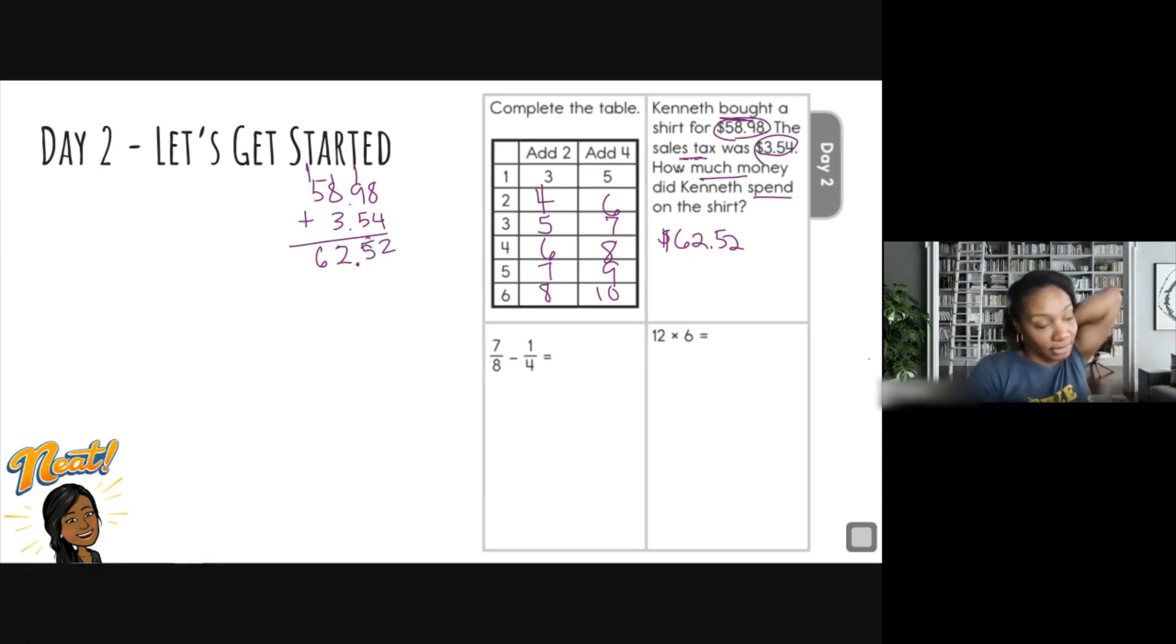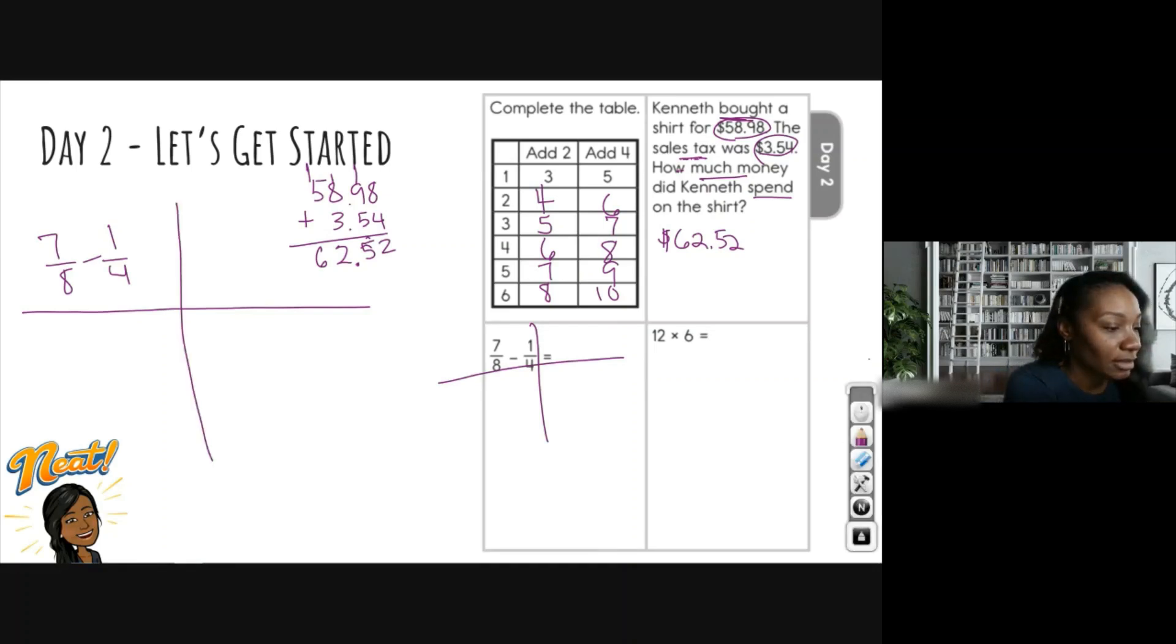All right. Let's move on to fractions. So it says seven eighths minus one fourth. Now, one thing when you are subtracting fractions, you have to have the same denominator. Right now we have eight and we have four. That is not the same. So we cannot subtract the fractions. I like to call this a four square method. So we're going to start with the problem and we would write out the multiples here. Since I don't have a lot of space here, I'm going to move it over here.